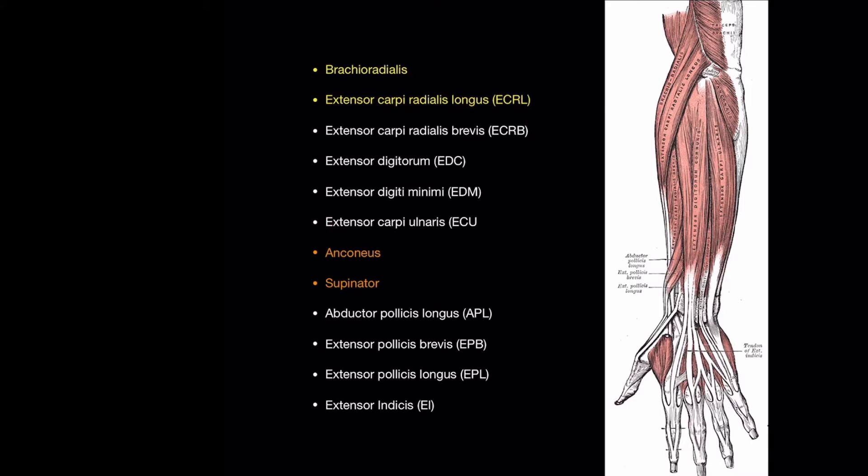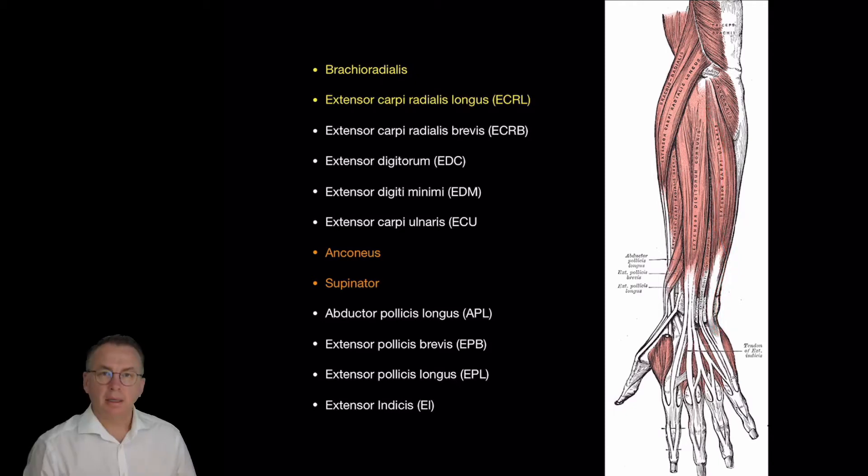The next four muscles all originate from the common extensor origin. Extensor carpi radialis brevis, extensor digitorum or also known as extensor digitorum communis, extensor digiti minimi and the extensor carpi ulnaris. This completes the superficial muscles.